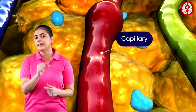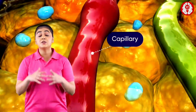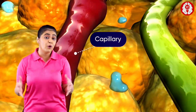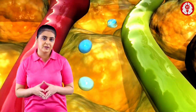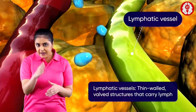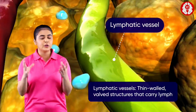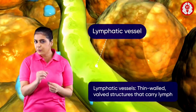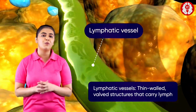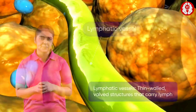Why is the lymphatic system necessary? Water, proteins, and other substances continuously leak out of tiny blood capillaries into the surrounding body tissues. The lymphatic system's main job is to collect this water and protein from the body tissues.